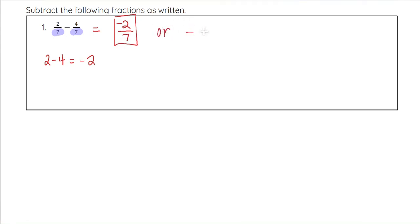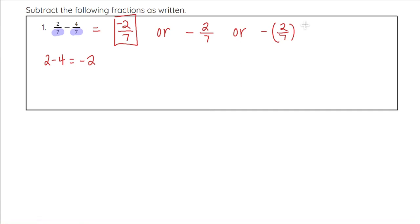This can be written in many ways. It could be written as negative in front of the fraction 2 sevenths, or with a negative and then parentheses around 2 sevenths, or technically even with the negative on the bottom, although that's not as common. These are all ways to write negative 2 sevenths in a different format.